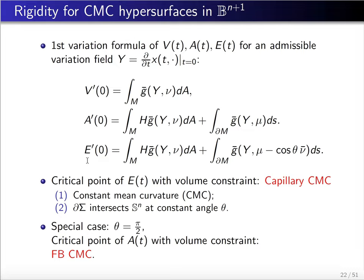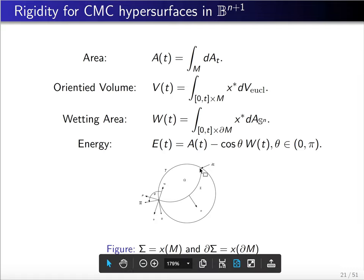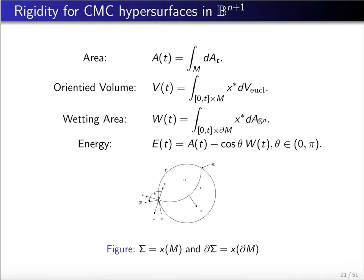The variational formula for the energy is given by this formula. The interior integration is again the mean curvature term. The boundary term has the inner product of Y and mu minus cosine theta times nu-bar. Recall that nu-bar is the conormal of the boundary of sigma viewed as the boundary of t, and mu-bar is the conormal of the boundary of t.